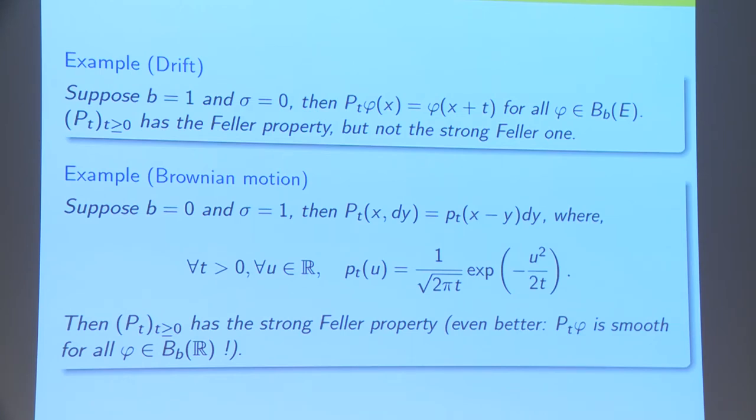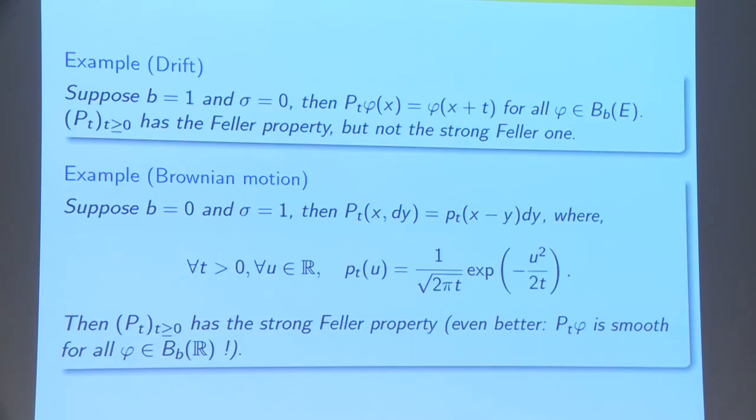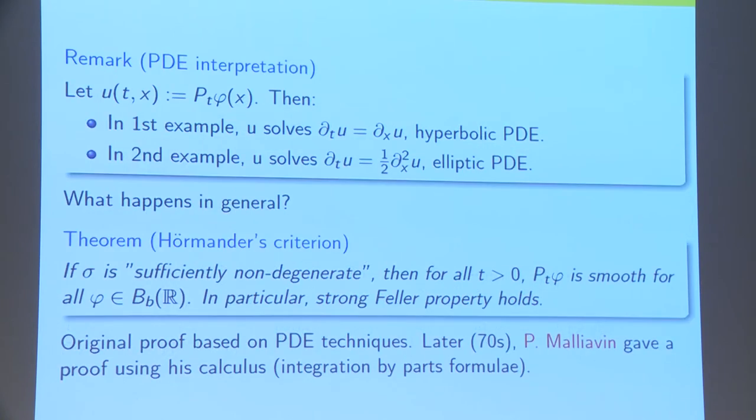Here are two cases that are very different. And we see that the important fact is that, in our SDE, the stochastic part should be non-degenerate enough for the solution to have some smoothing property. The PDE interpretation is that, in the first example, we have a hyperbolic PDE, a transport equation. Whereas, in the second example, we have an elliptic PDE, which creates regularity.